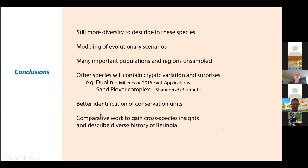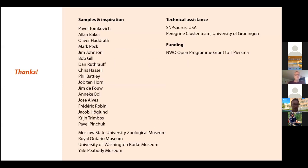What I'm trying to tell you is that there's still a lot of diversity yet to be described in this flyway — not just in these species but other ones. I'll be doing lots of modeling to understand how these populations occurred, but we still have a lot of populations and regions unsampled. Surely we will find more cryptic variation and surprises, which can be important for identifying conservation units and for understanding how the history of Beringia shaped our flyway. Thank you very much.